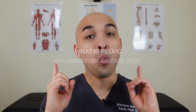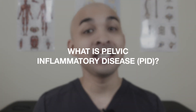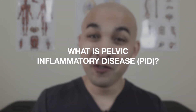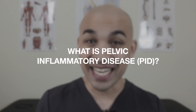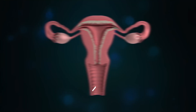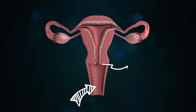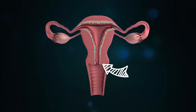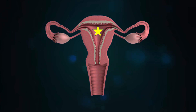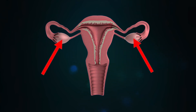So what exactly is pelvic inflammatory disease? It's an infection that starts in the vagina and the cervix and makes its way up to the uterus, the fallopian tubes, and the ovaries.